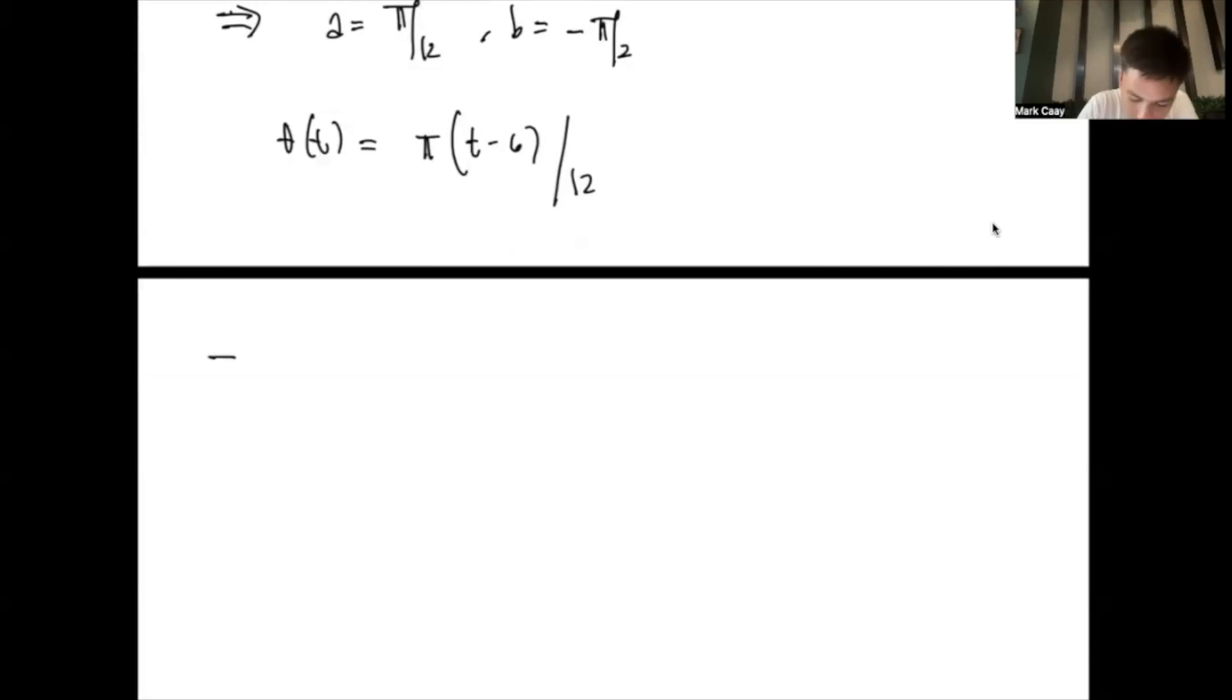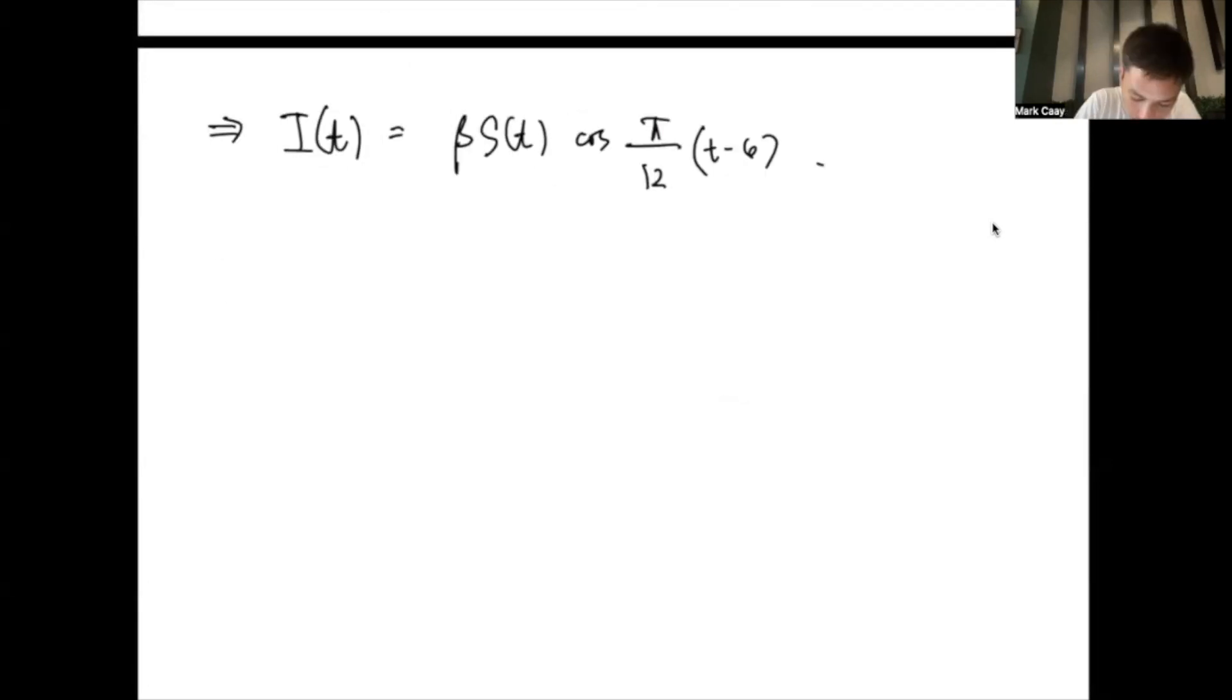So, what's the implication? We have our intensity, i(t) equals beta s(t) cosine of pi over 12 times (t minus 6). Now, remember, s(t) is pi r squared (t). This is the area, because we assume that the leaf is circular in shape. So, your r here is the radius. So, this implies that r is equal to the square root of s over pi.